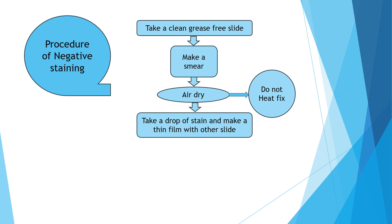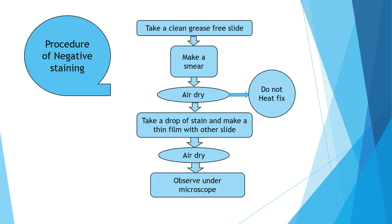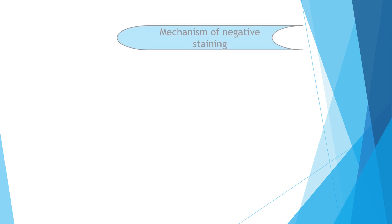After air drying, take a drop of stain and make a thin film with another slide. Generally, we make a smear at the center of the slide. When it gets air dry, take a drop of stain at one edge of the slide and with the help of another slide make a thin film of that stain. Further air dry the thin film and observe under microscope. This is the simple procedure of negative staining.